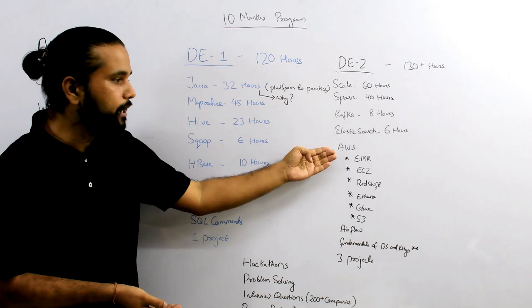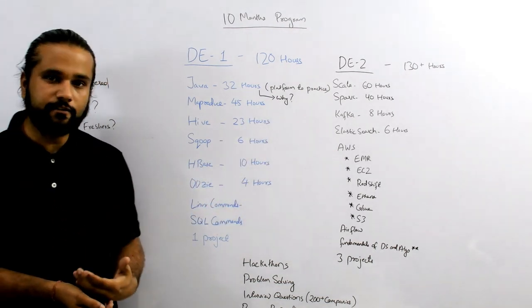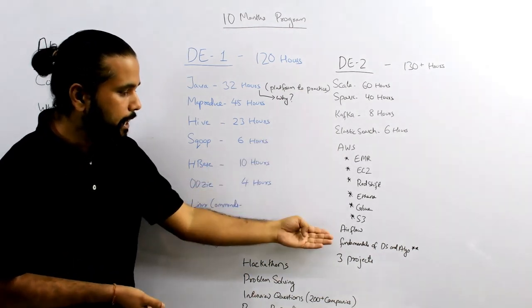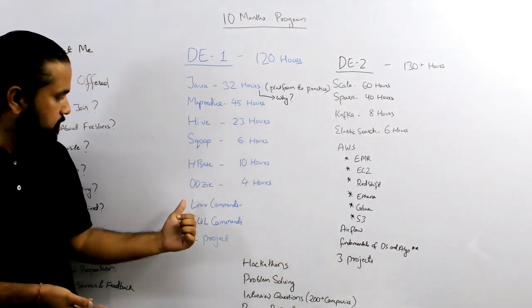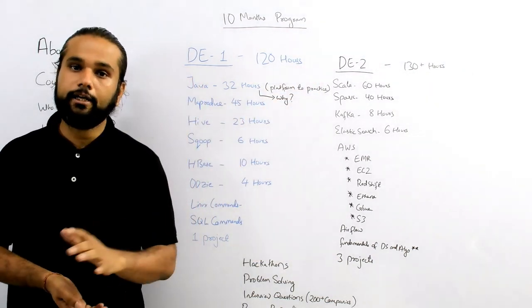The DE2 course will also cover Cloud. We have included AWS, where we'll talk about EMR, EC2, Redshift, Athena, Glue, and S3. Then we have Airflow, another scheduler just like Oozie, which we'll cover in the DE2 program.